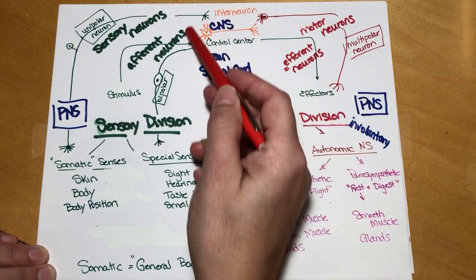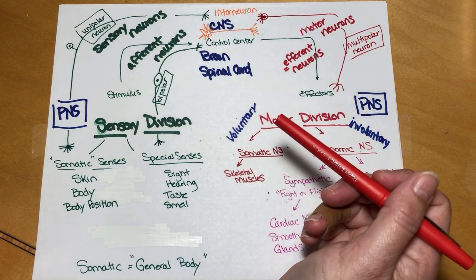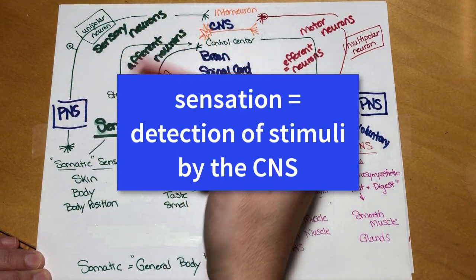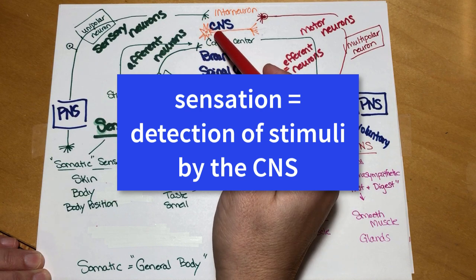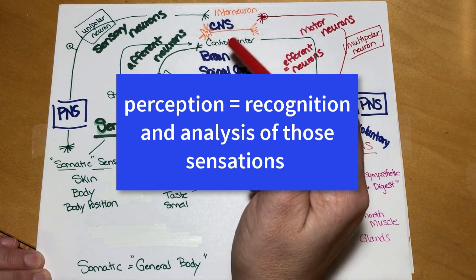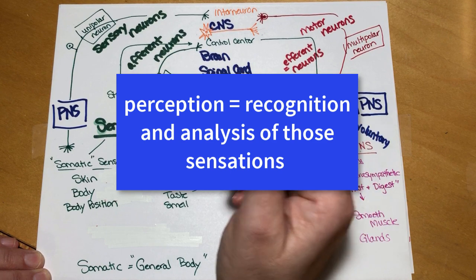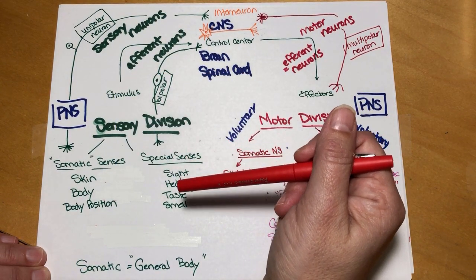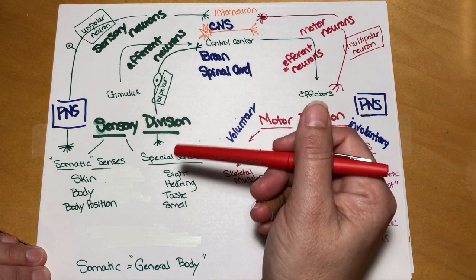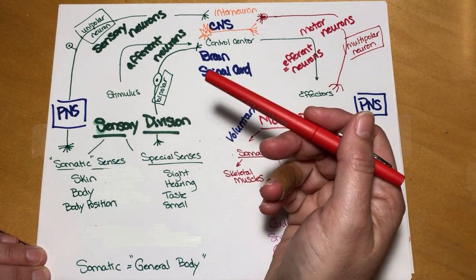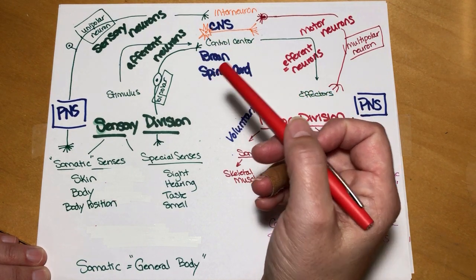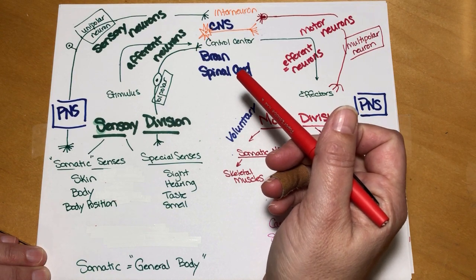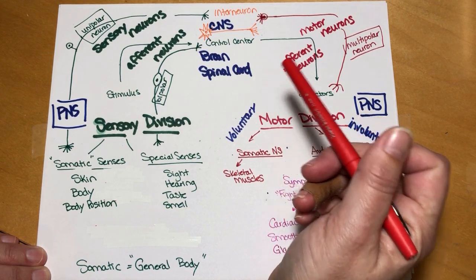Once the information gets into the CNS, we need to perform integration and analysis. Sensation is the detection of the stimuli by the CNS. Perception is the recognition and analysis of those sensations. Sensation is receiving the information — something that's small, round, red, sitting on my desk, pretty juicy. Perception is the analysis and recognition of those characteristics, meaning that that object is an apple.